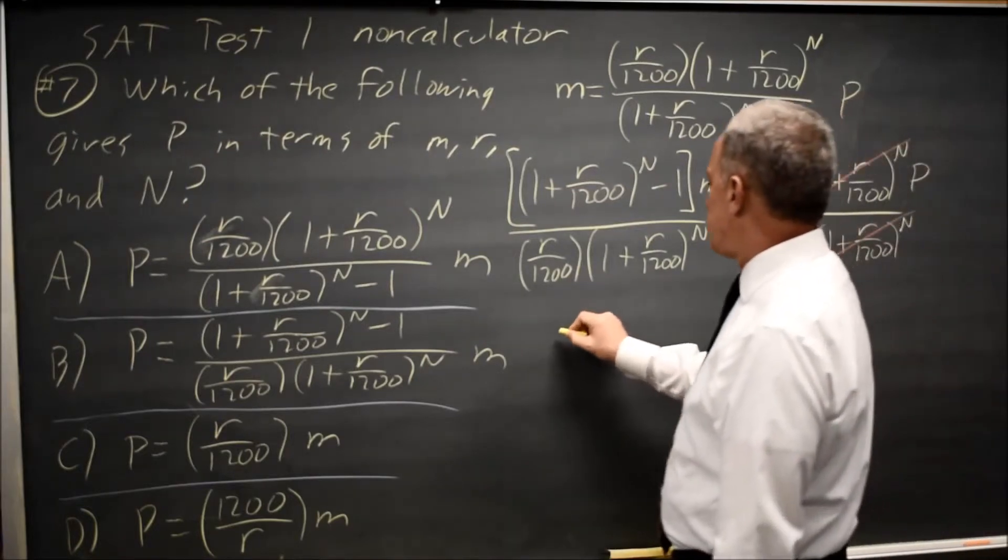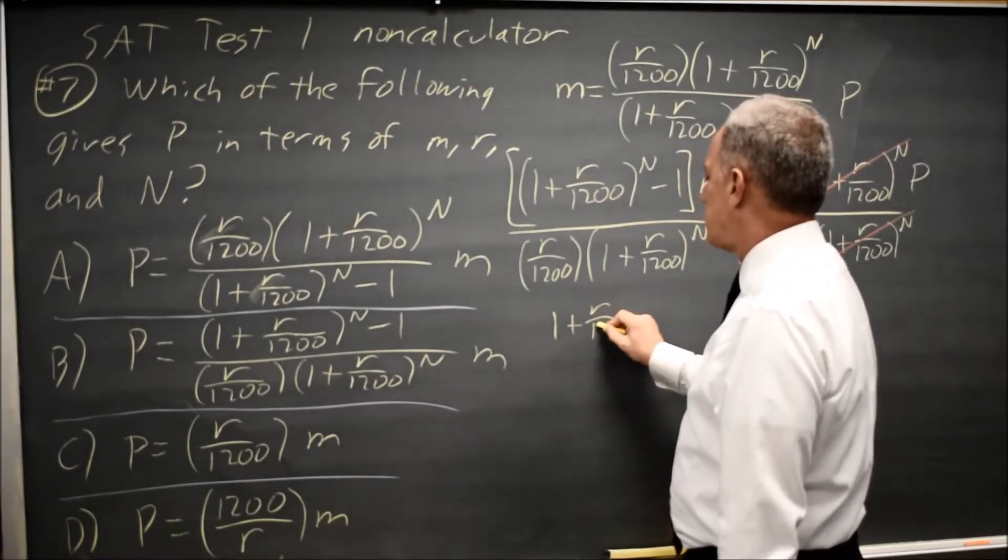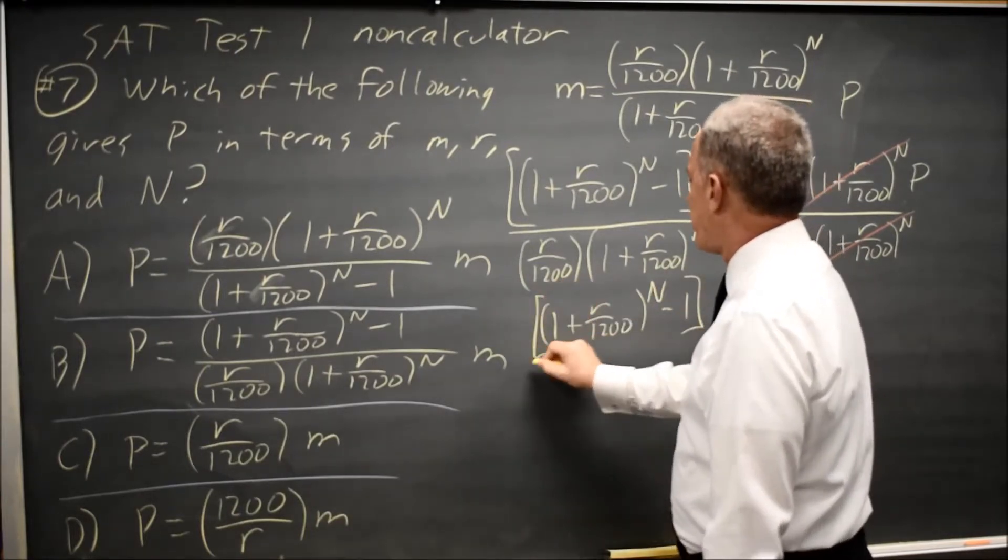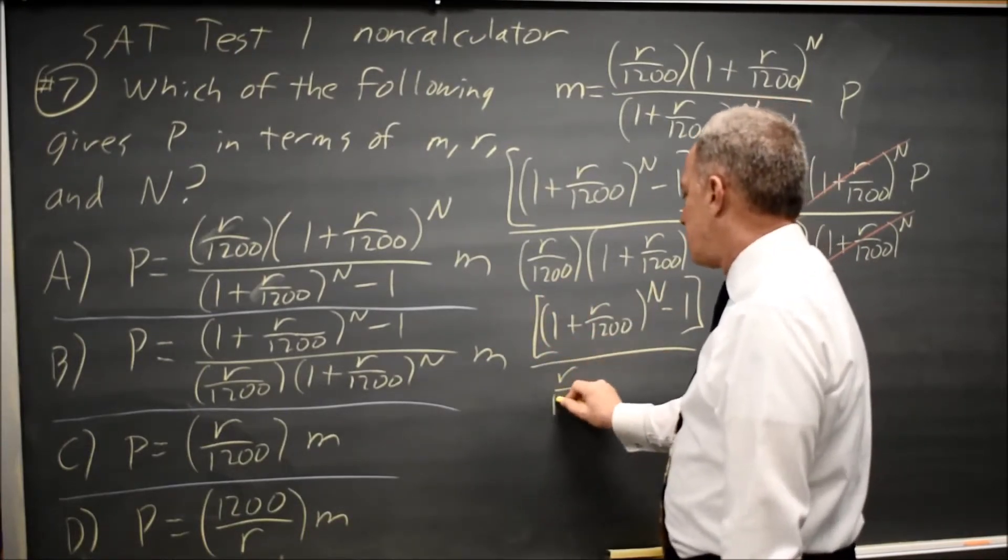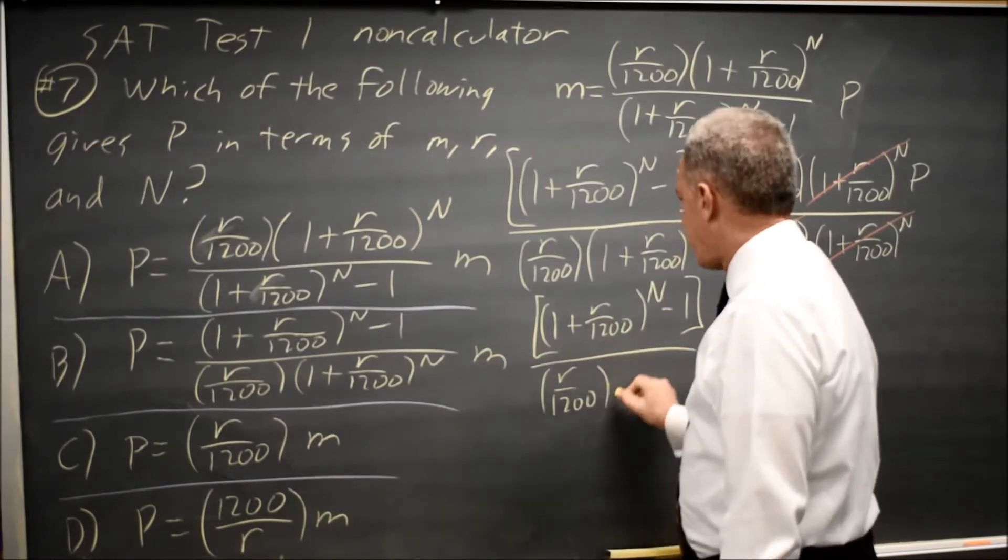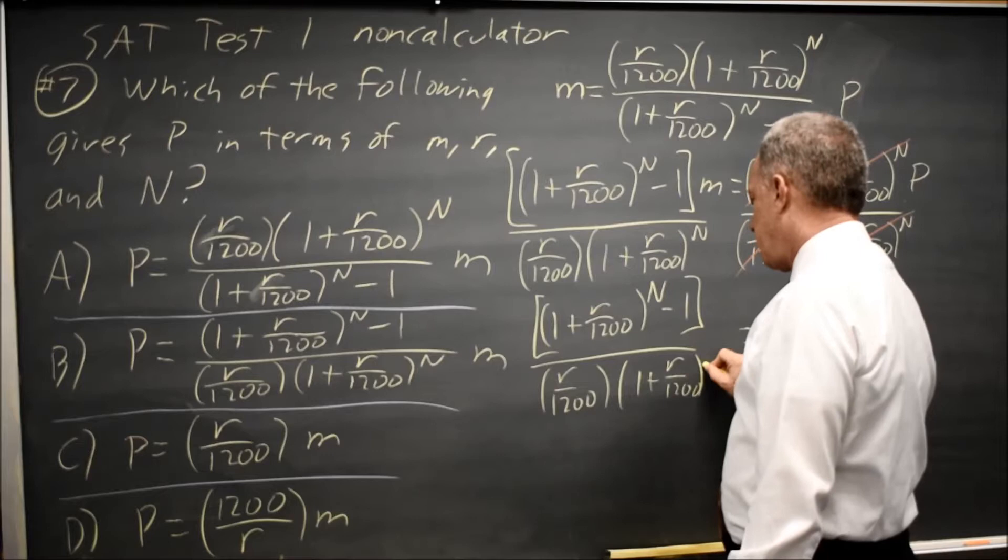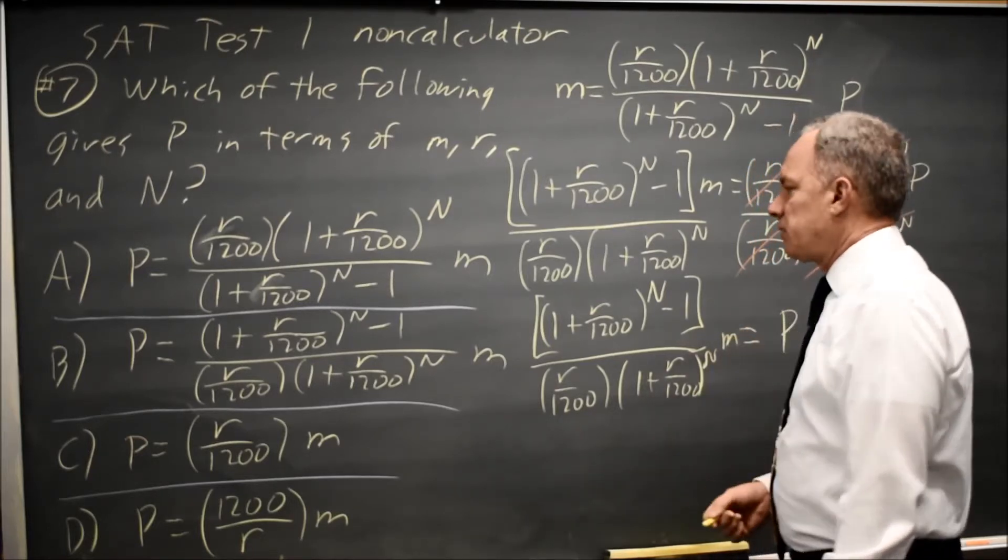The left hand side is 1 plus R over 1200 to the N minus 1 divided by R over 1200, 1 plus R over 1200 to the N, and that whole thing is multiplied by M.